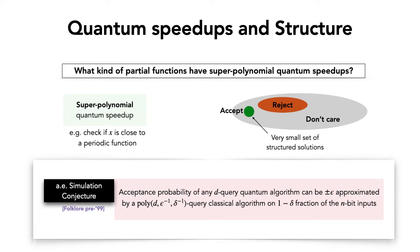The almost everywhere simulation conjecture says that if you have a D-query quantum algorithm, you can simulate it classically — approximating its acceptance probability up to some small additive error — with only a polynomial overhead on a 1-minus-delta fraction of the inputs. So ignoring a small delta fraction of structured solutions, you can simulate the quantum algorithm classically with polynomial overhead. This is a well-known open problem in quantum query complexity.